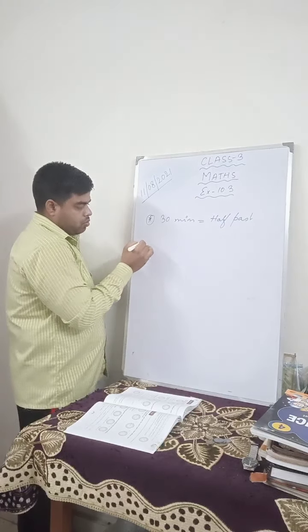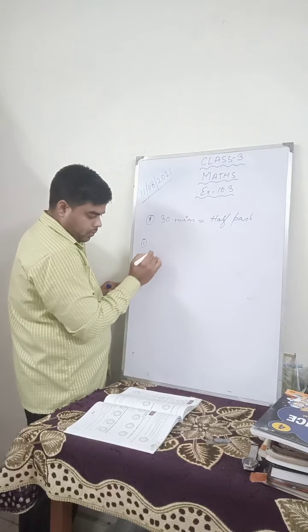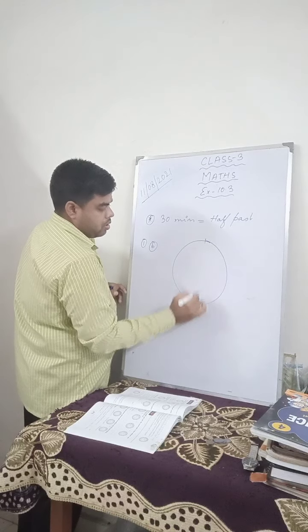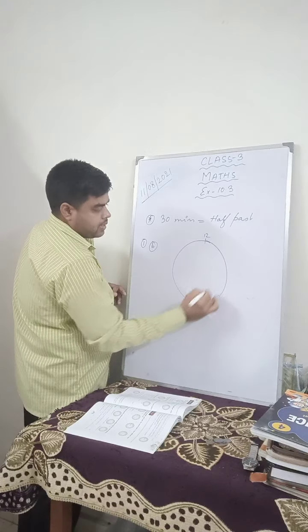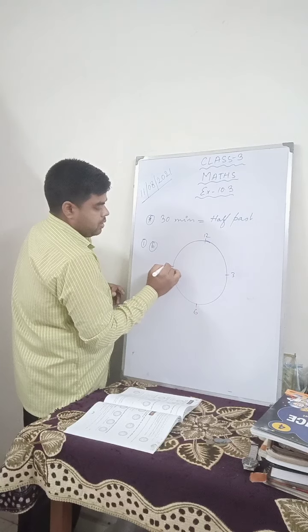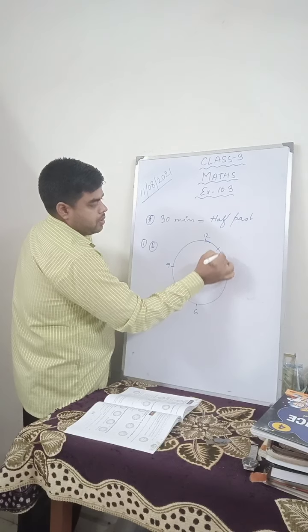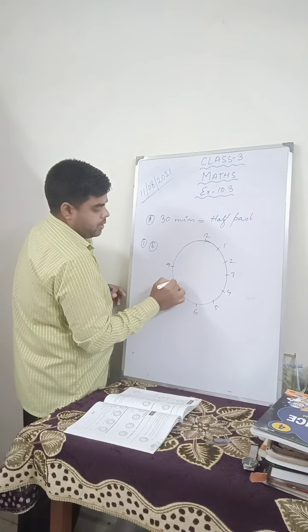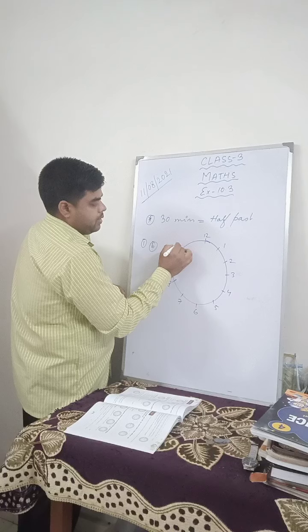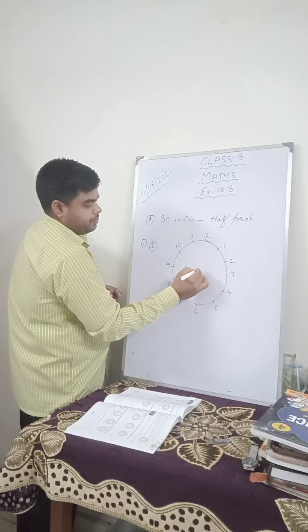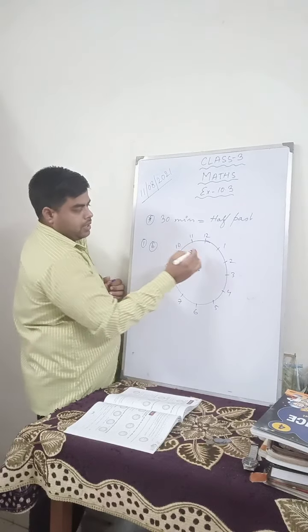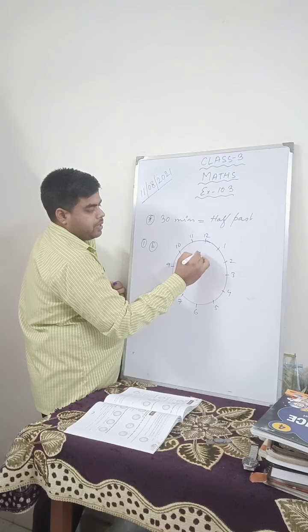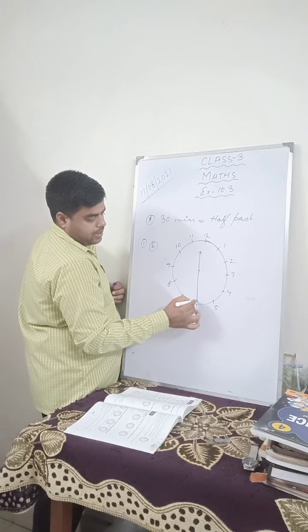Let us do question number 1B. This is the clock — 12, 6, 3, 9, 1, 2, 4, 5, 7, 8, 10, 11. Now in question number 1B, the hour hand is in the middle of 11 and 12, and the minute hand is facing 6.